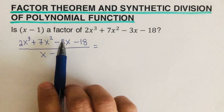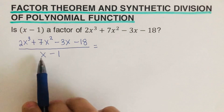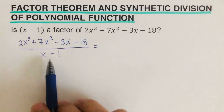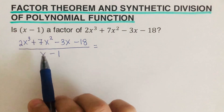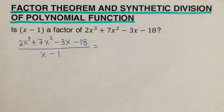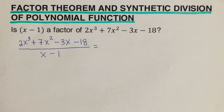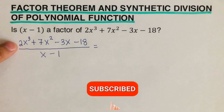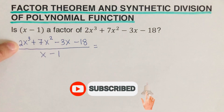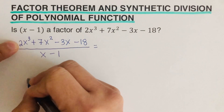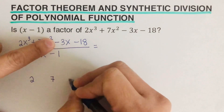If we divide this polynomial by this binomial and the remainder is zero, then x minus 1 is a factor. To divide these two polynomials we're going to use synthetic division. First, we are going to write only the coefficients of each of the terms.